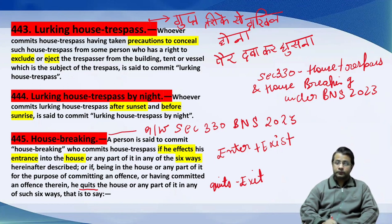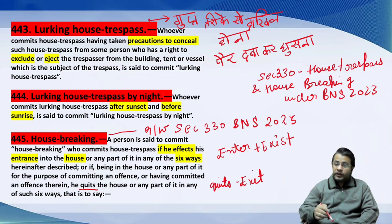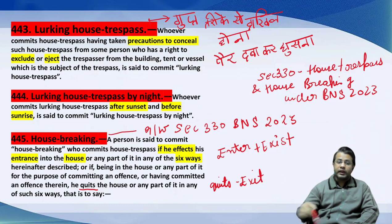अब आते हैं house breaking। देखें house breaking क्या होता है — a person is said to commit house breaking who commits house trespass if he affects his entrance into the house. House trespass यहाँ भी रहेगा, लेकिन किस तरह से वो जाता है उसमें — entrance और exit किस तरीके से होता है। यहाँ पर दो चीज़ें याद रखनी हैं: enter plus exit किस तरीके से होता है। वो following छह तरीके बताए गए हैं house breaking के।